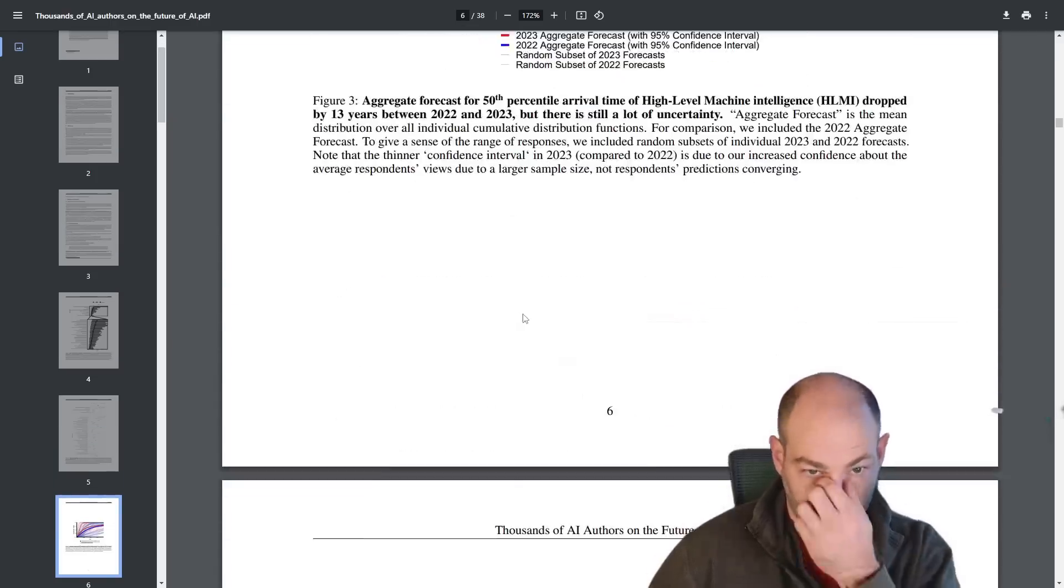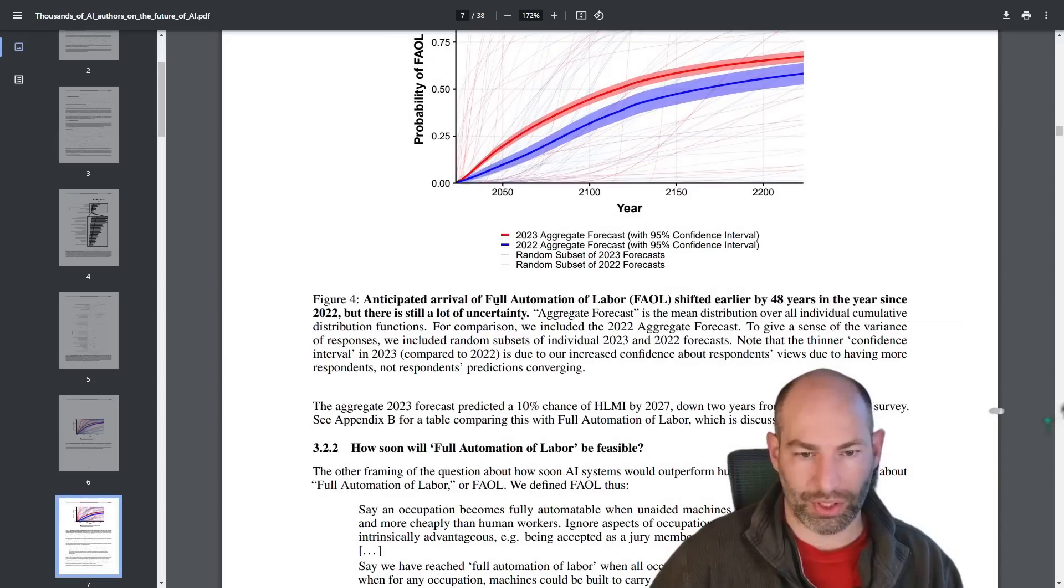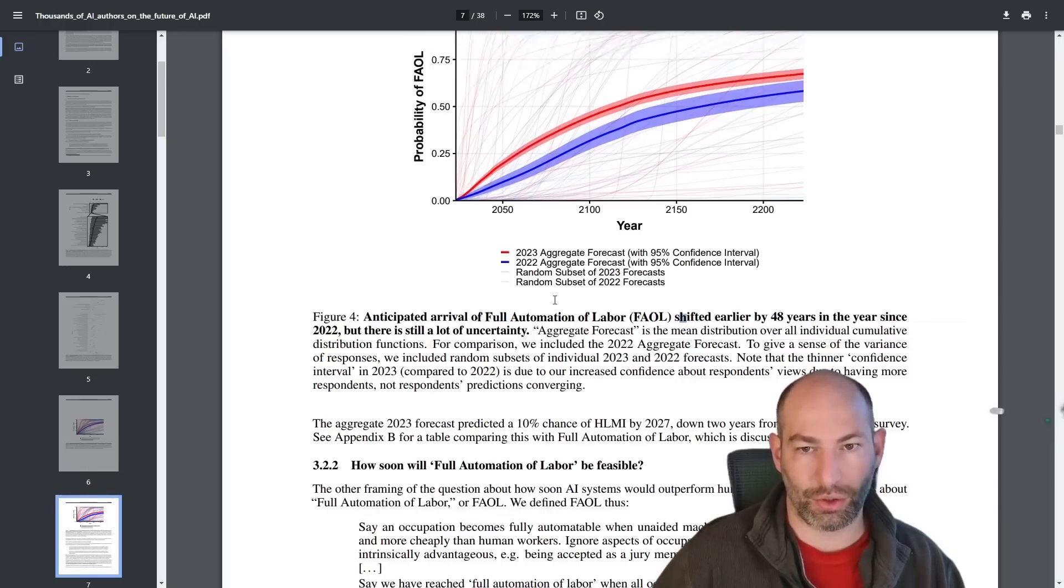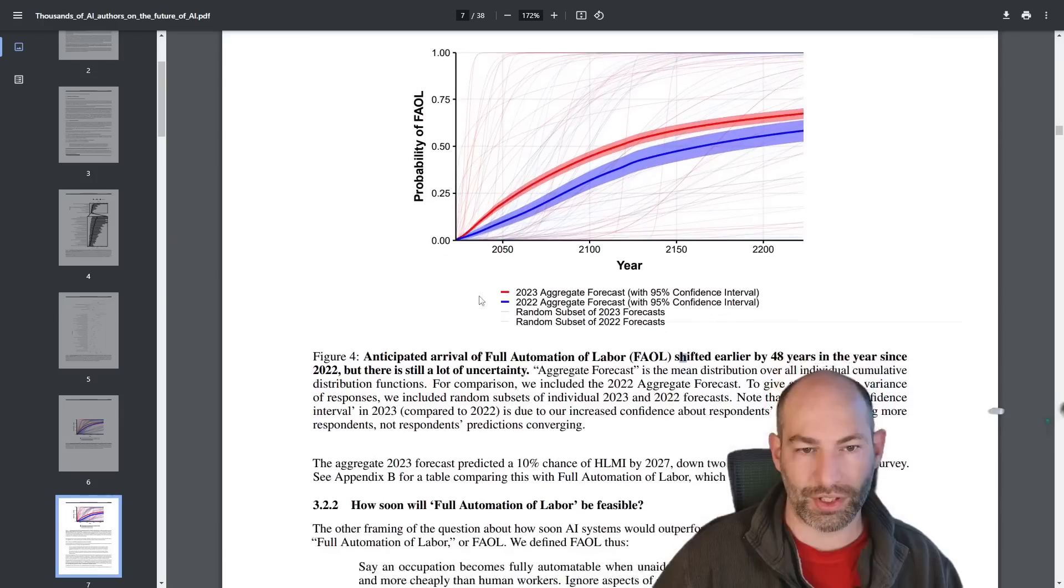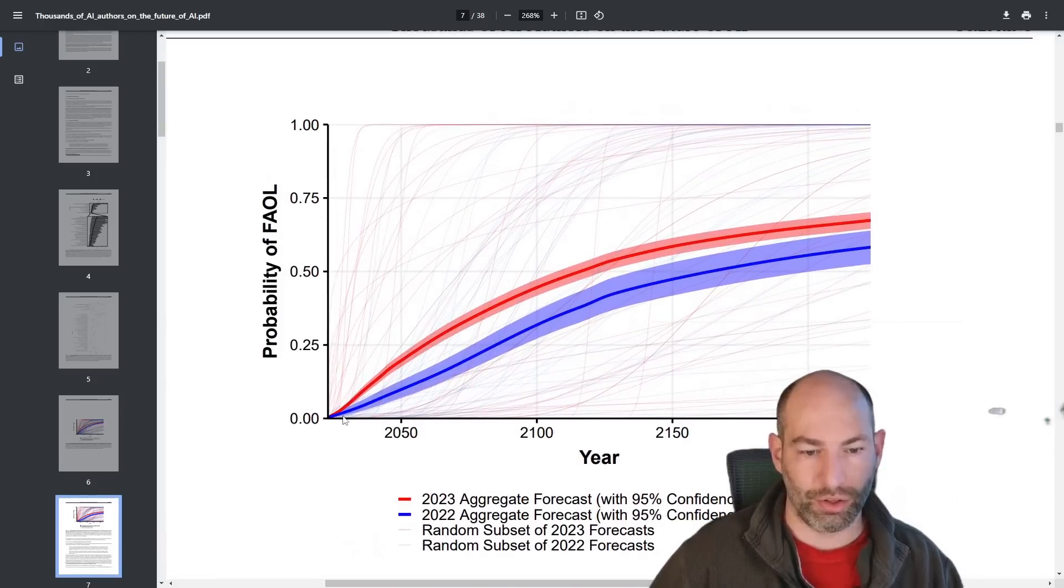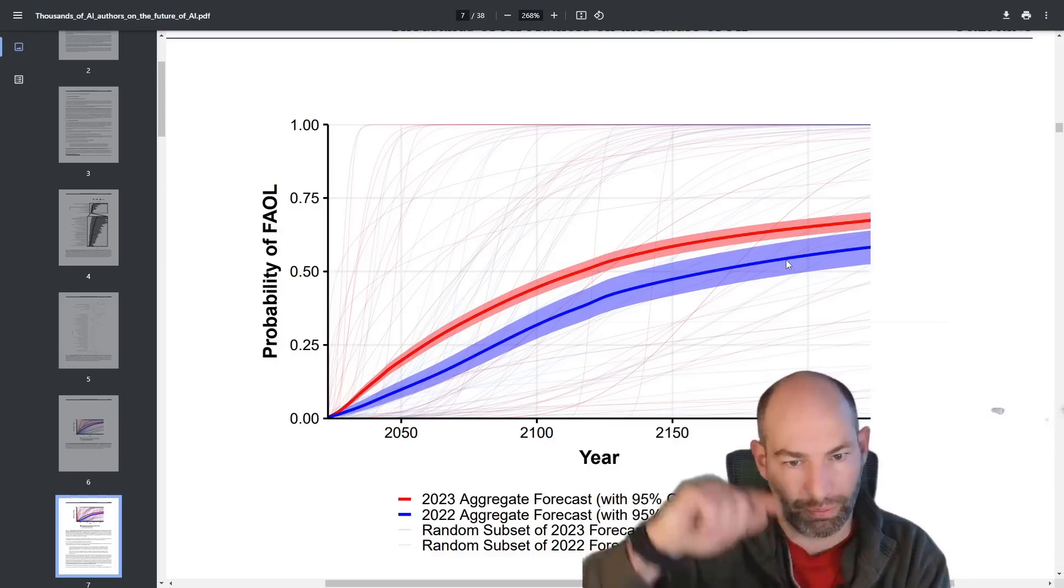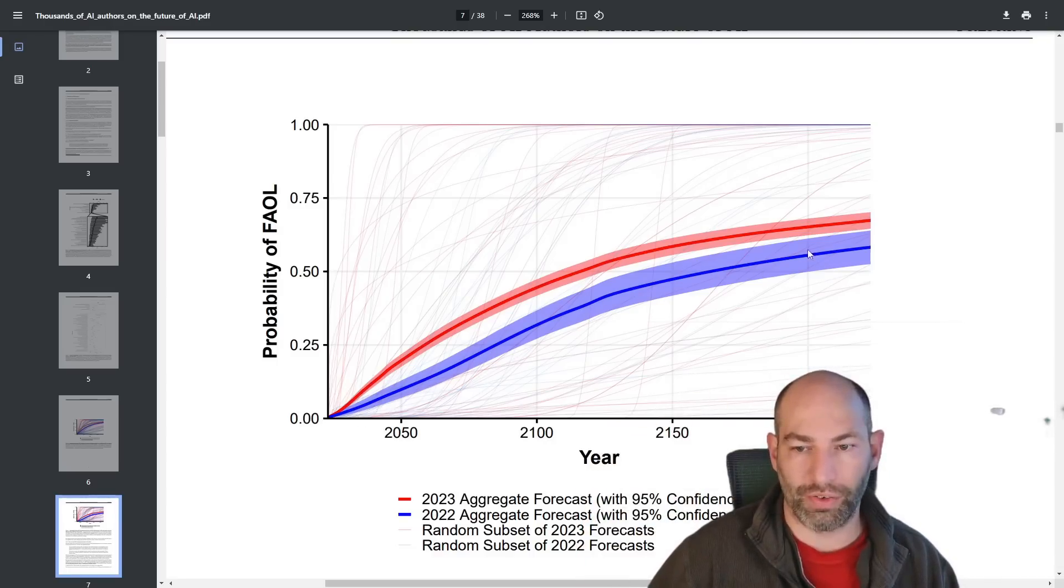Now, the other thing that this does is it looks at the full automation of labor. This one shifted earlier by 48 years since 2022. But the confidence interval, so this is the primary graph that I want to focus on. So the red year is 2023, the aggregate forecast. 2022 is this one. I apologize, I had the colors backwards. So the shallower curve is basically slower takeoff with a wider confidence interval. And then the thinner red line that is steeper, faster takeoff.